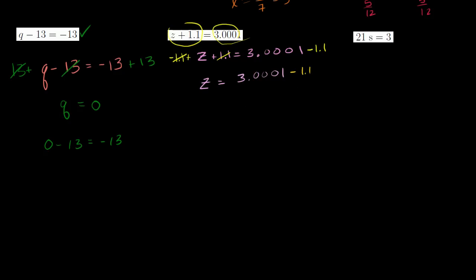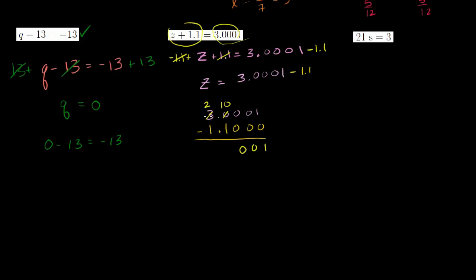Now we do a little decimal subtraction — that's probably the hardest part of this problem. Aligning the decimals: 3.0001 minus 1.1000. Working through: 1 minus 0 is 1, 0 minus 0 is 0, 0 minus 0 is 0. We can't do 0 minus 1, so we regroup — borrow from the 3, making it a 2, and that gives us 10 tenths. So 10 minus 1 is 9, and 2 minus 1 is 1. So z is equal to 1.9001.